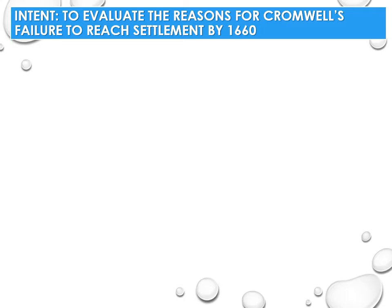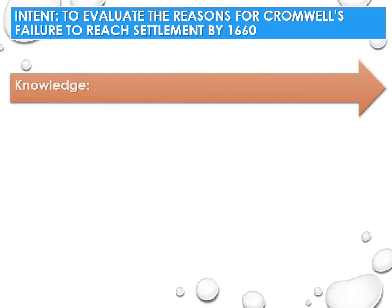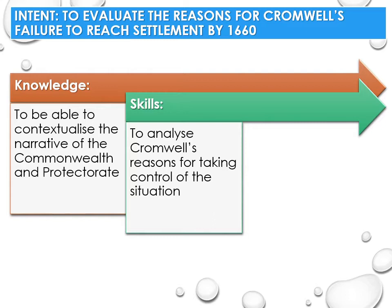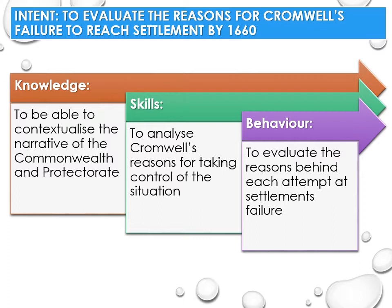In this lecture, we will review the attempts to reach a constitutional settlement by 1660 and why each attempt failed. In doing so, we will, knowledge-wise, be able to contextualise the narrative of the Commonwealth and Protectorate. Skills-wise, analyse the reasons why Cromwell attempts to take control of the situation so that you can then behaviourally evaluate the reasons behind the attempts' failures.